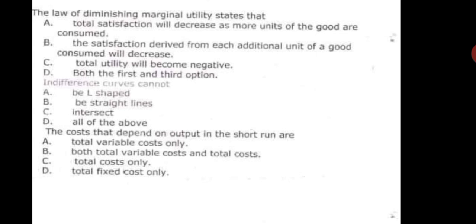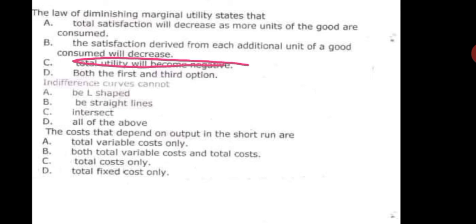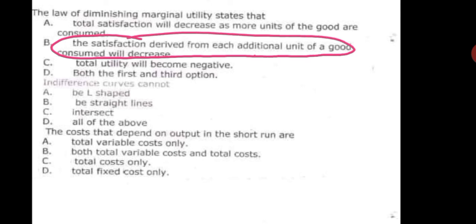The next question is: the law of diminishing marginal utility states — total satisfaction will decrease as more units are consumed, total satisfaction derived from each additional unit consumed will decrease, total utility will become negative, or both first and third are correct. Total utility cannot become negative. The correct option is B — total satisfaction derived from each additional unit of a good consumed will decrease.